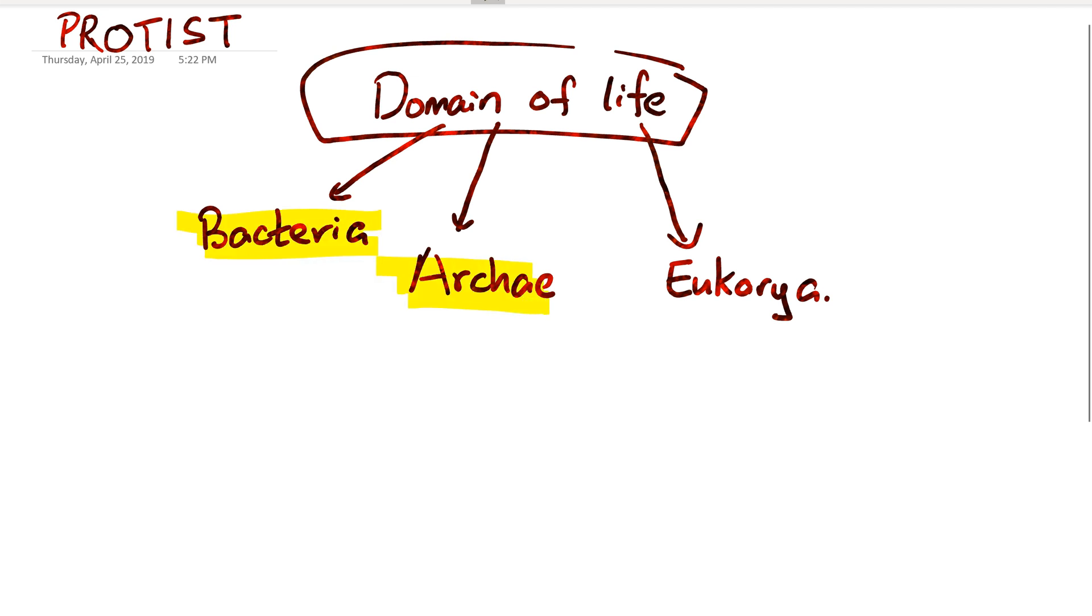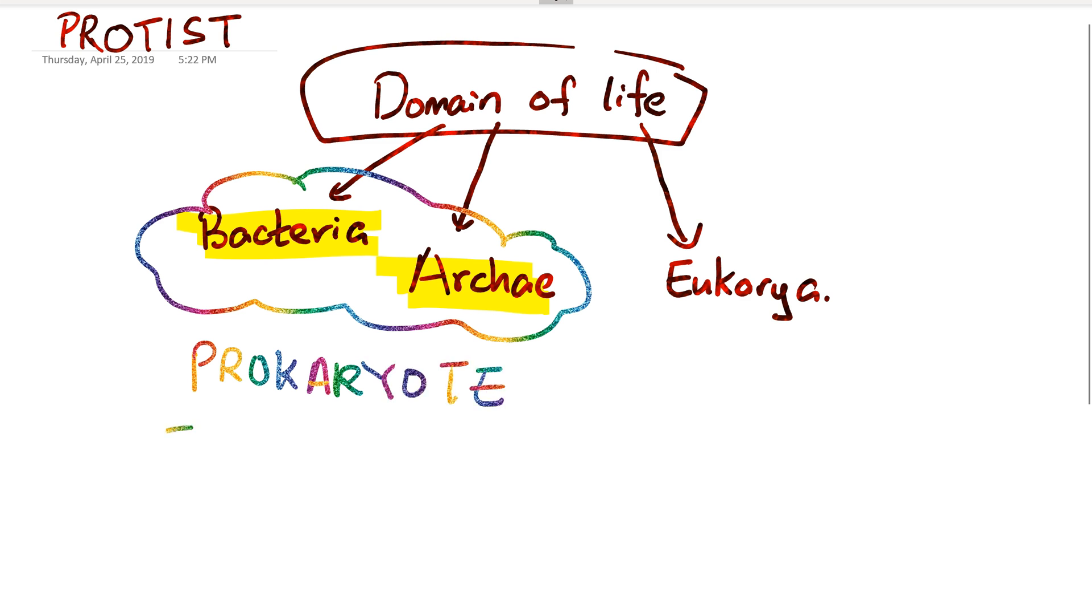Bacteria and archaea are both prokaryotes, meaning they don't have a nucleus or membrane-bound organelles. Prokaryotes means before, so they don't have a nucleus. Eukarya is made of eukaryotic cells.